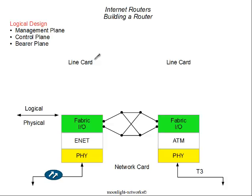If we look at a router, we're going to see that there are three planes — and planes mean functional layers. There is the bearer plane, and that is the plane that carries the traffic. We saw a bit of that in class number two around how traffic goes from the physical layer up to the IP layer. That's the bearer plane where user traffic passes.